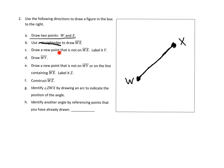The next step says draw a new point that is not on the line segment WX and label it Y. So here's a point — we could have put it anywhere, but I put it there.